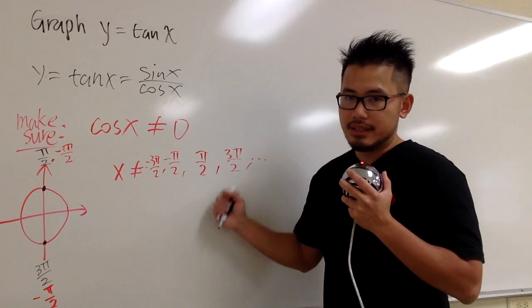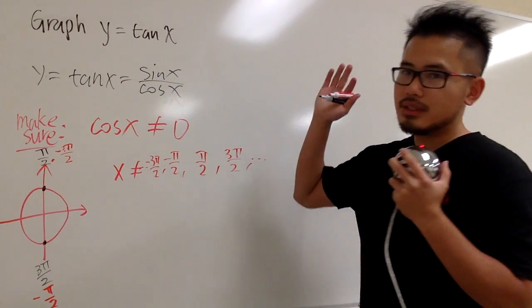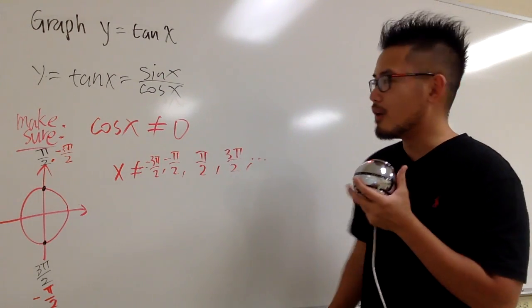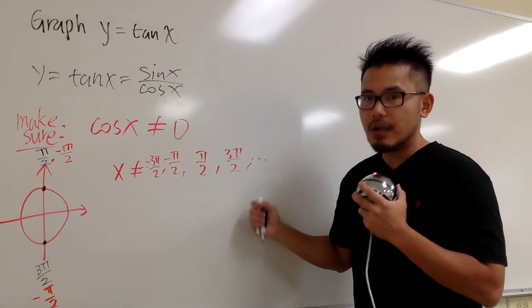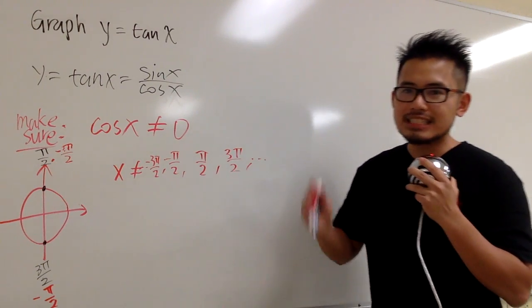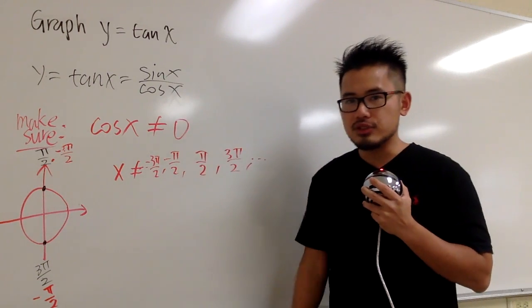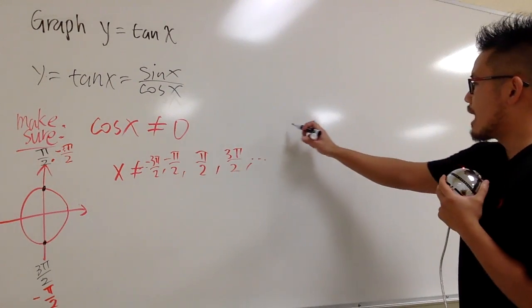So, why do we bother to find this? First of all, of course, so we can state the domain, but second of all, these values right here are going to tell us where the vertical asymptotes are going to be for the graph of tangent. And now we are ready to graph this.